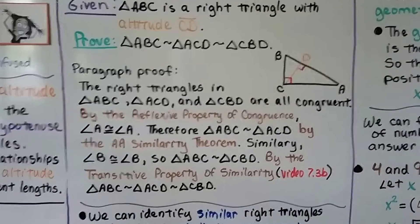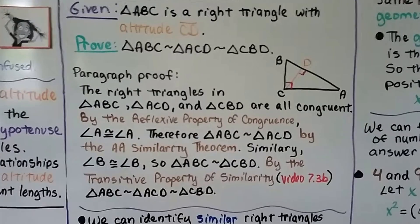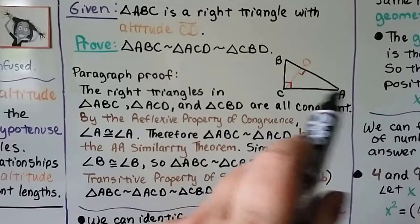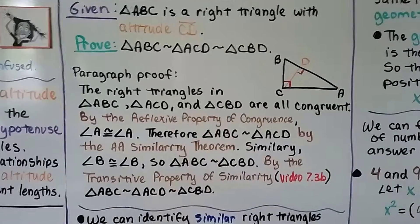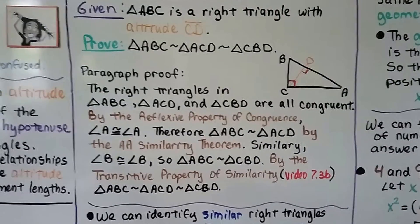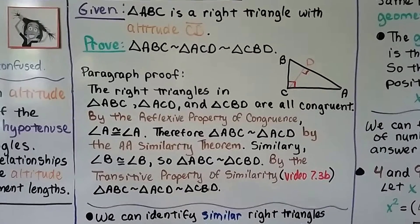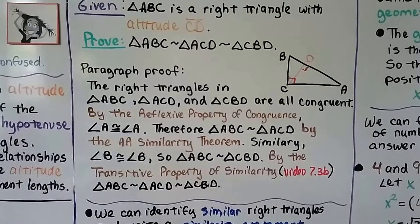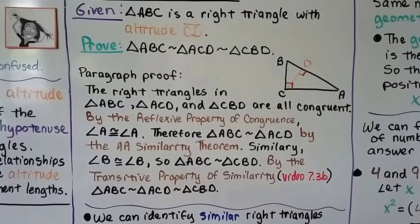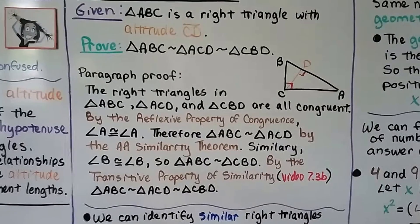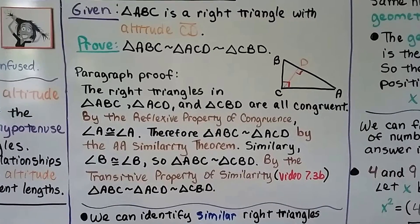Therefore, triangle ABC is similar to triangle ACD by the AA similarity theorem — we have angle A and both triangles have right angles. Similarly, angle B is congruent to angle B, so the angle B in the big triangle is congruent to angle B in the little triangle. So triangle ABC is similar to triangle CBD. By the transitive property of similarity, triangle ABC is similar to triangle ACD and similar to triangle CBD.